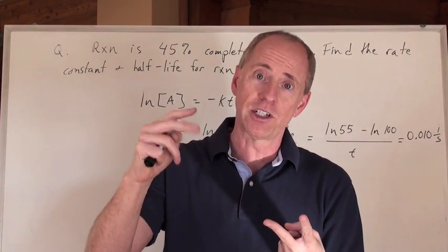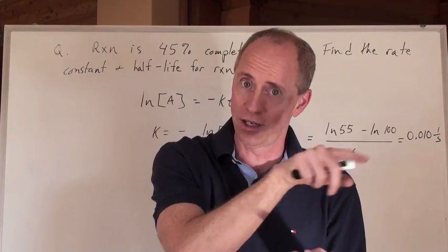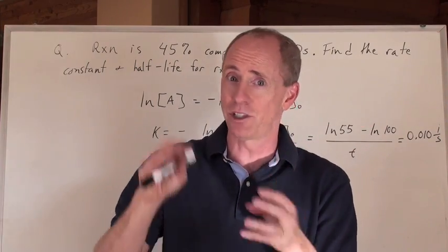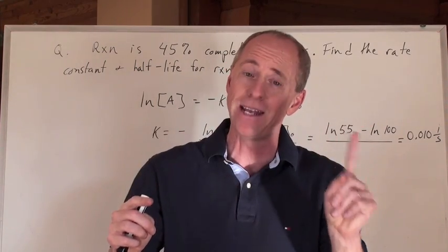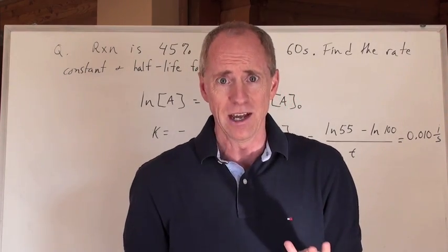Second order, which is one over the concentration equals KT, not negative, just KT plus one over the initial concentration, and zero order, which is just concentration equals negative KT plus the initial concentration. You have to memorize three formulas.